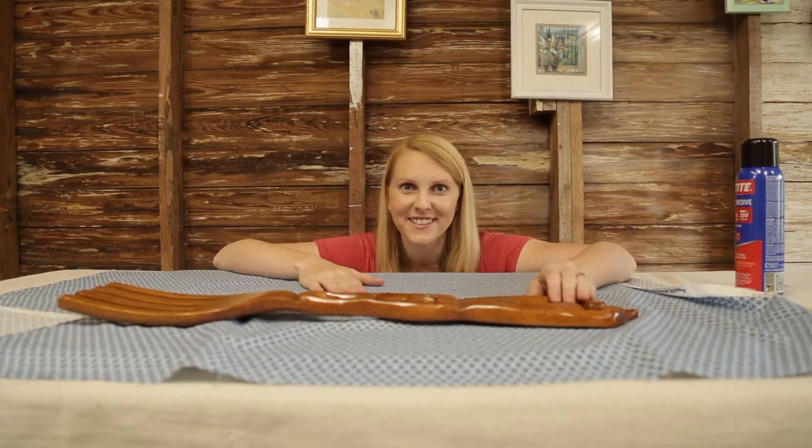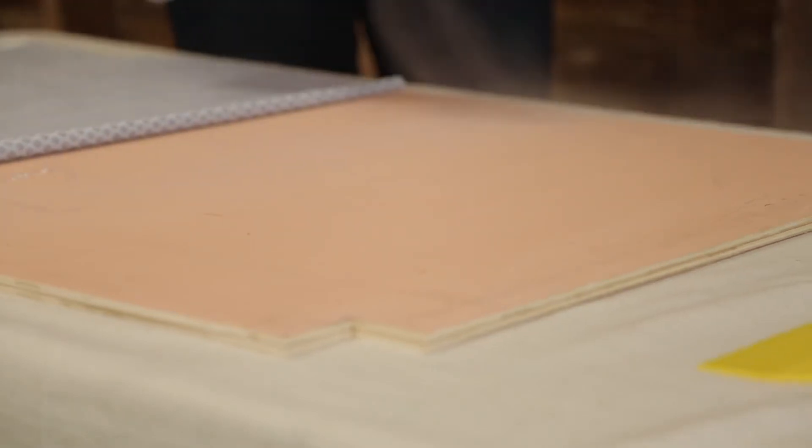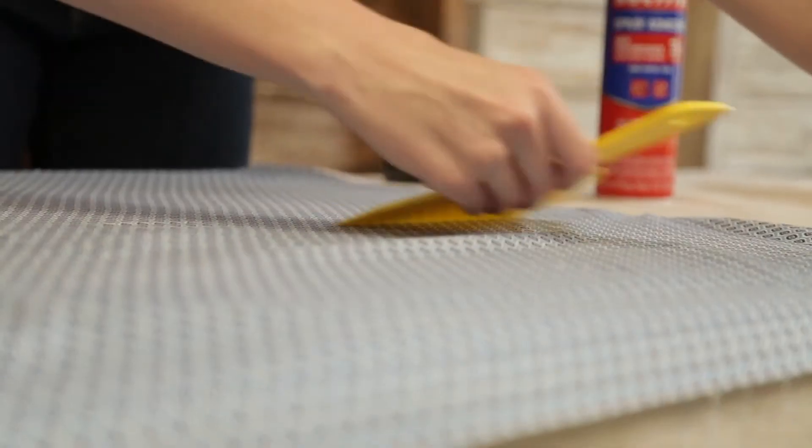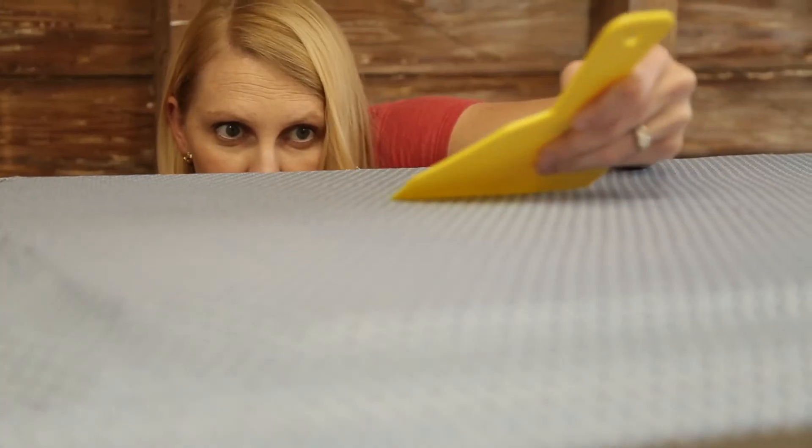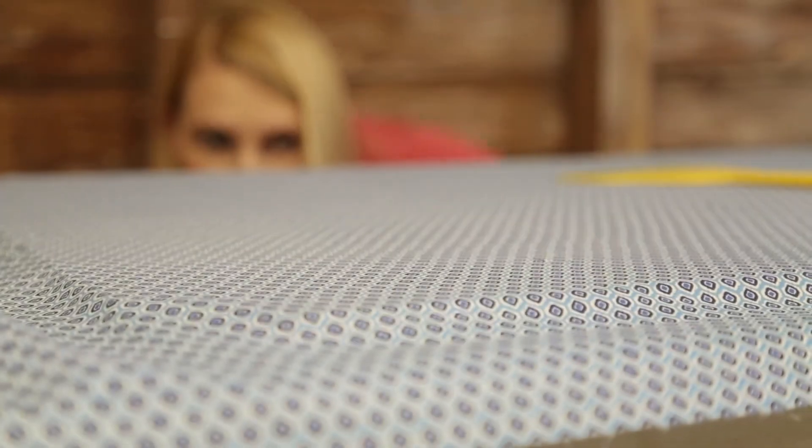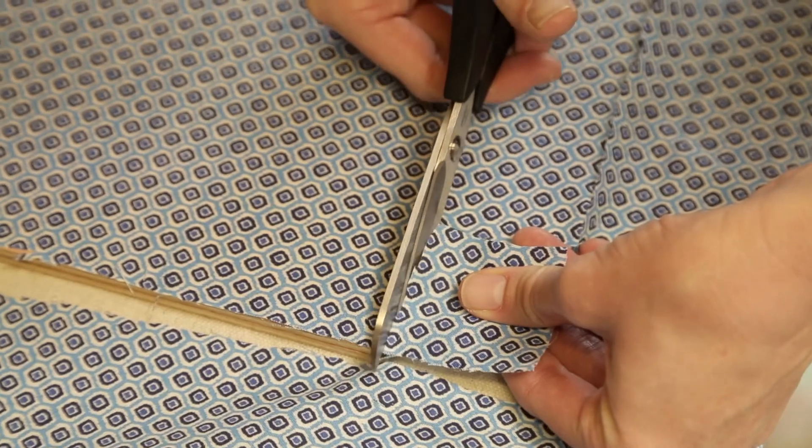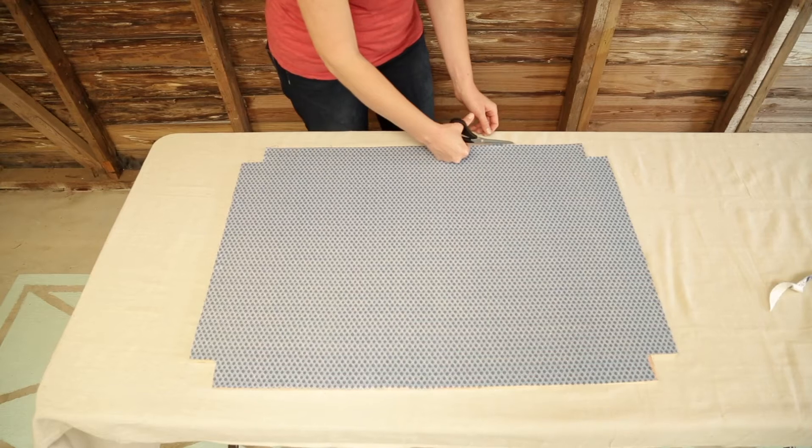Spray adhesive works great to hold lightweight fabric and solid flat objects like this plywood together. The adhesive tacks up fast though, so it's best to divide up your work. Here I'm placing the fabric onto the plywood and working one side at a time, quickly smoothing out any wrinkles before it's too late. Since the frame is going to be covering the edge of the fabric on the plywood, I don't have to be too precise when I'm trimming it up.